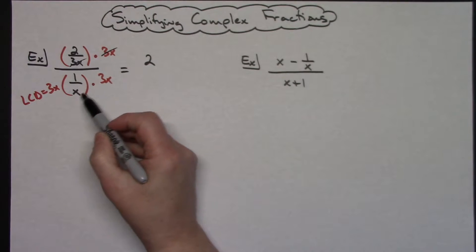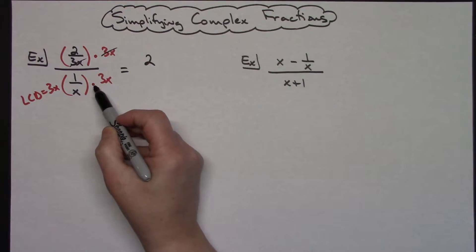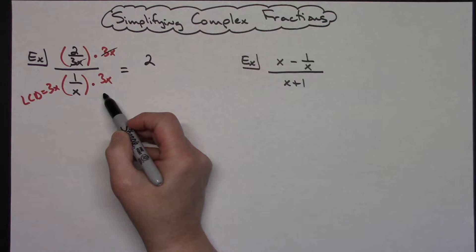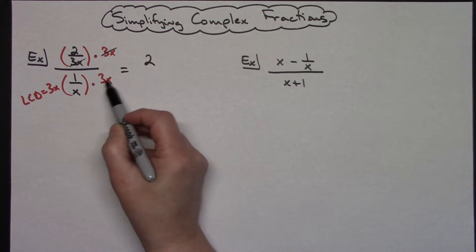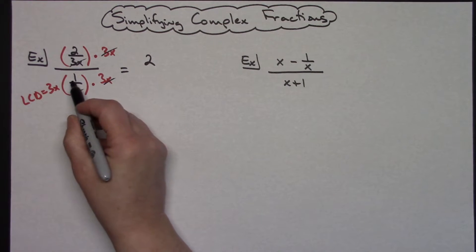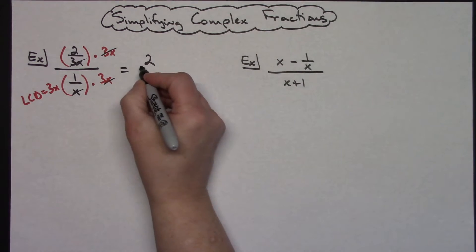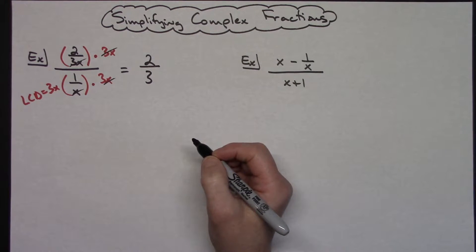Now when I multiply down here, I've got that 3x again — it's in the top. I've got an x there and an x there, so I can cross out the two x's. What's left is 1 times 3, and that gives me just a 3. So real quickly, I have simplified that complex fraction down to 2 thirds.